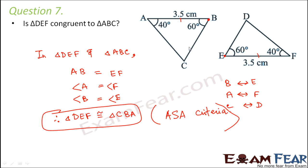Once you have established that two triangles are congruent, try to find their corresponding points so you can write the congruence statement in a more meaningful way. Since angle E equals angle B, points B and E overlap. Similarly, since angle A equals angle F, point A and point F are corresponding points.